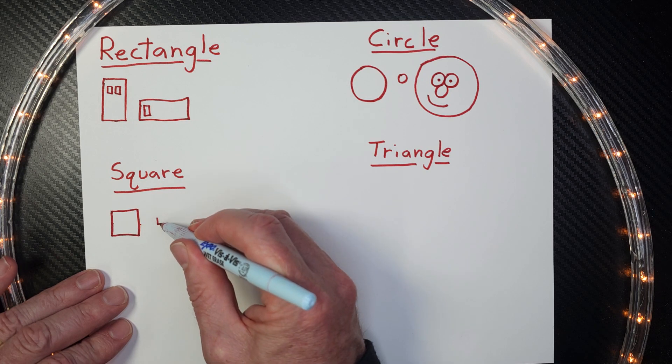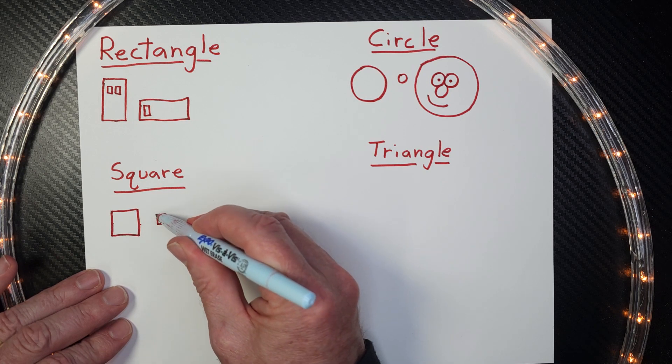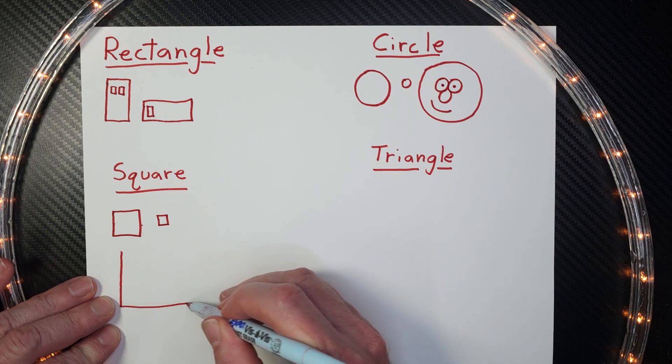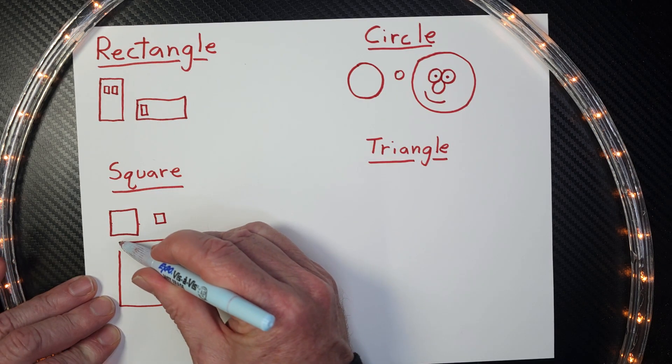You can make little tiny squares. And you can make a really big square just like this. That is a square.